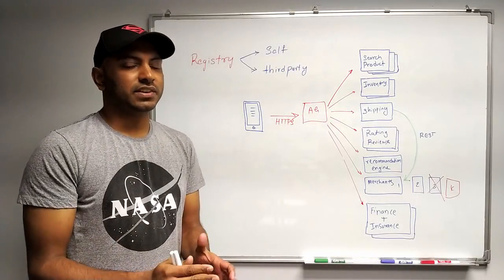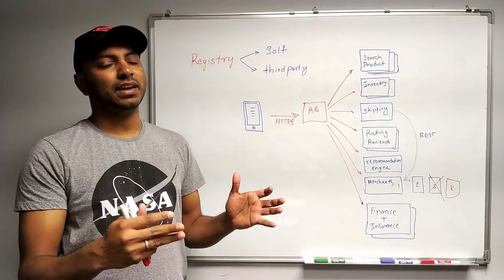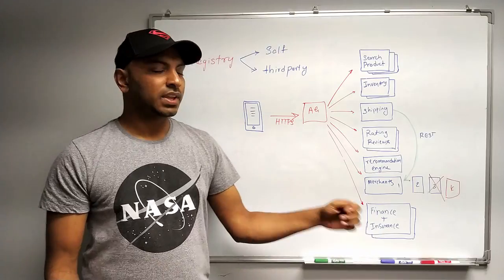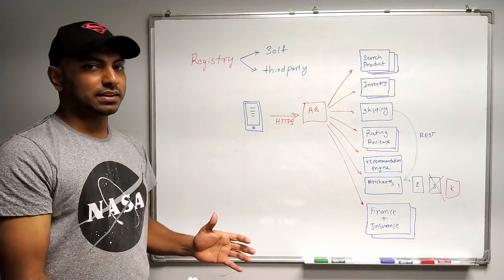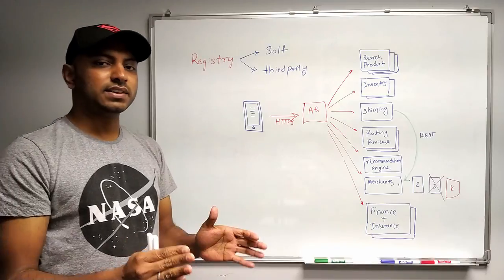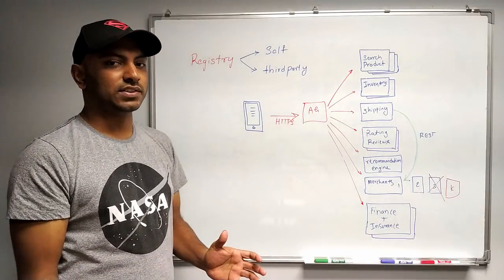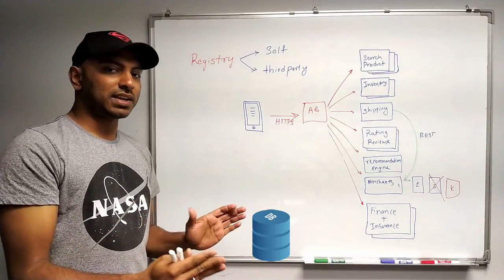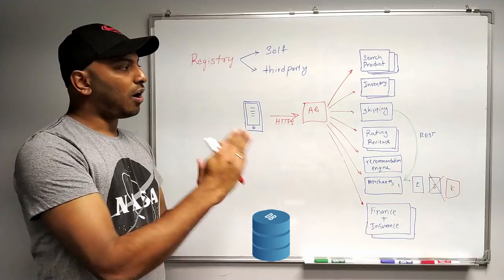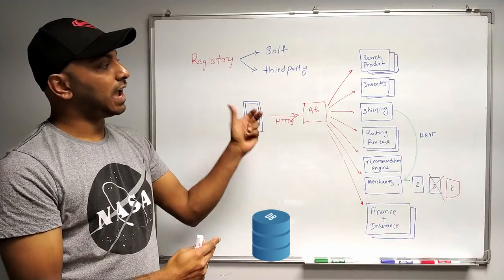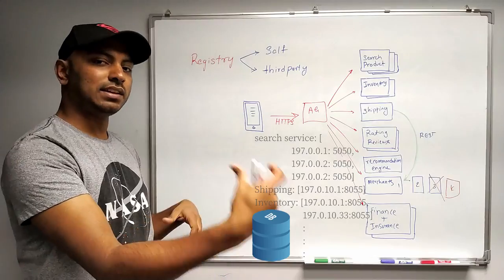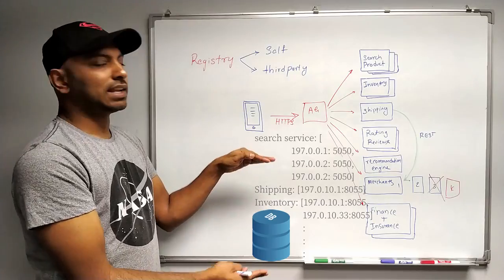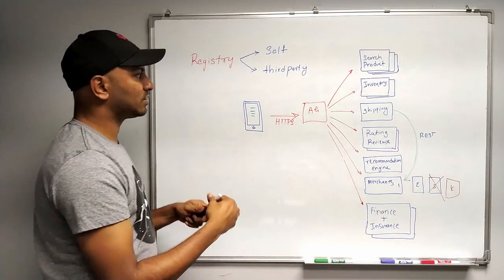So what is service discovery? Service discovery is a pattern to identify the network addresses of all of the instances of the microservices. How do we do that? For that, we basically use something called a service registry. What is a service registry? A service registry you can think of as a separate service or a database which actually contains the list of all of the instances of every microservice and its network addresses — basically IP and port combination. That list is basically called a service registry. So let's draw that.